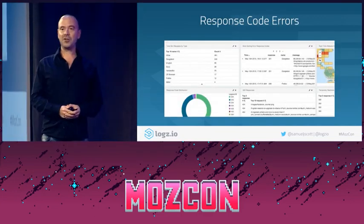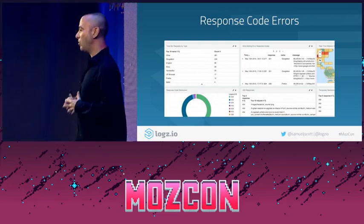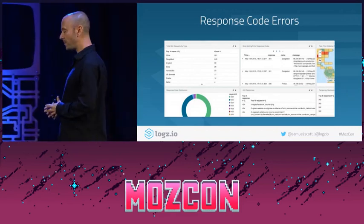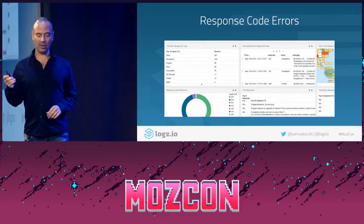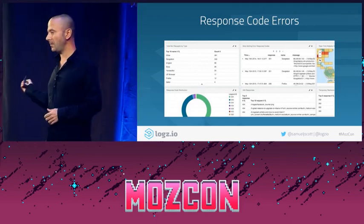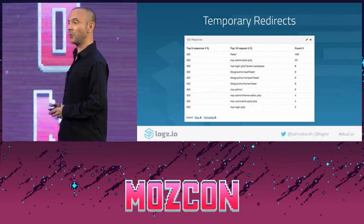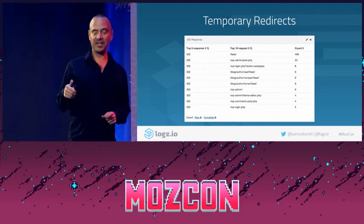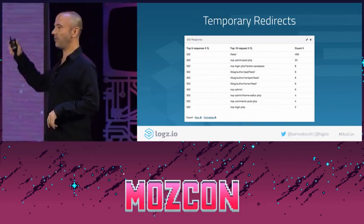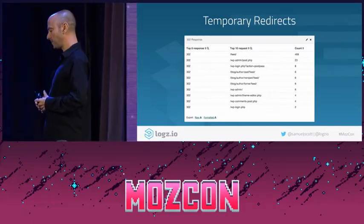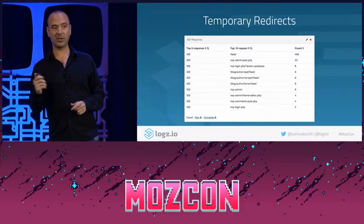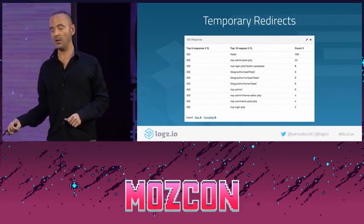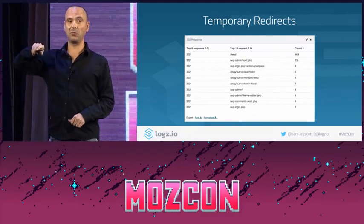Response code errors. One thing you can do with server log analysis is batch URLs and overall directories by response code. You can collect all of your 404s together, all of your 302s together, so you know exactly where problems are occurring and what needs to be done to fix them. A common example is 302 redirects — that's a temporary redirect. It tells Google and end users that you're redirecting from one URL to another, but only temporarily. The problem is that temporary redirects don't pass link juice. So 99% of the time you want to change temporary 302 redirects to 301 permanent redirects, which do pass link juice.